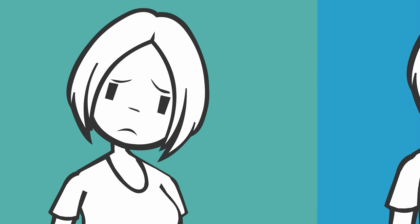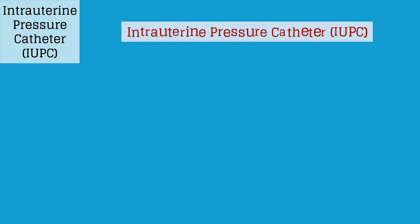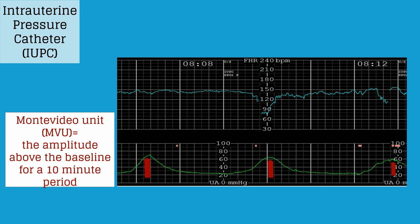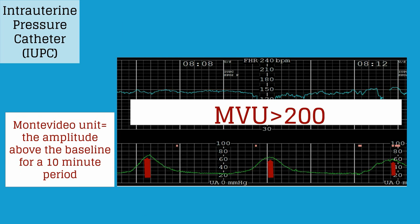In order to assess the strength of the contractions, we place an intrauterine pressure catheter or IUPC. This tracing is from an IUPC, the strength of the contraction is the amplitude of each wave. A Montevideo unit can be simply calculated by measuring the amplitude above the baseline for a 10-minute period and adding them together. Normal labor progress is usually associated with a Montevideo unit of greater than 200.